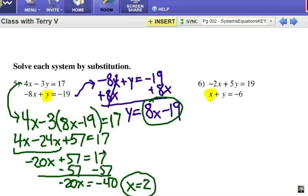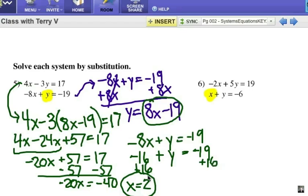That is one of my answers. Now I choose either equation to solve and substitute that in. I'm going to take this first equation. Negative 8x plus y equals negative 19. I'm going to substitute in positive 2 for the x. So that would be negative 16 plus y equals negative 19. I'm going to add 16 to each side. So I can get the y by itself. And y would be negative 3.